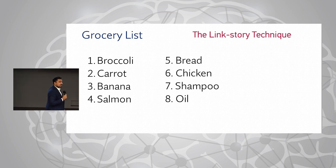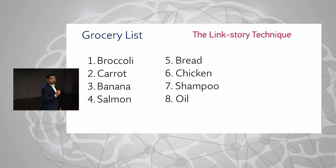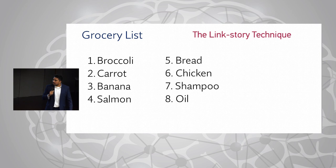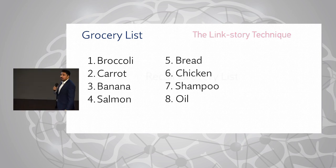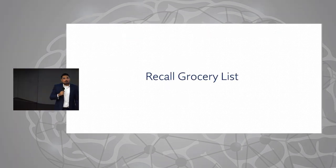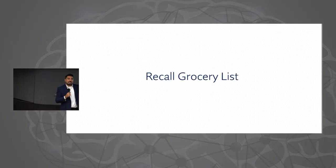Next, oil: instead of washing away the shampoo with water, the chicken takes a bottle of oil and pours it all over itself to wash away the shampoo. Visualize the texture that the shampoo and oil create. Let's see if we can recall — try to recall in terms of your images right now.